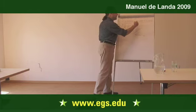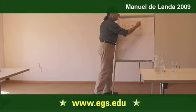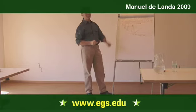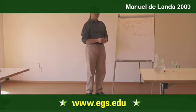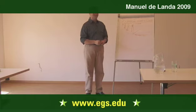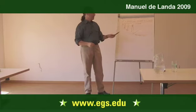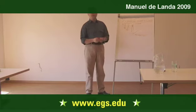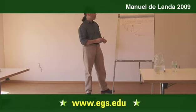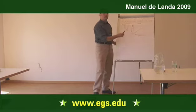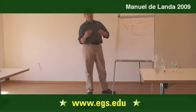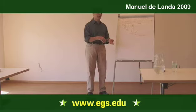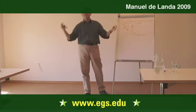This is called a linear pattern, for the obvious reason that it looks like a line — in fact, it is a line. Metals are very well behaved and therefore they deform very proportionally. You double the load, you double the length. You triple the load, you triple the length. It's the simplest possible pattern of becoming.